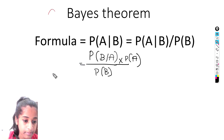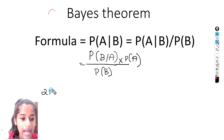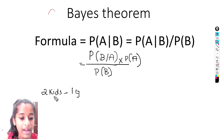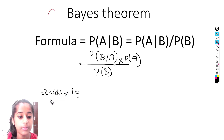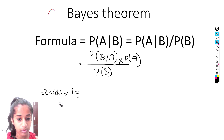Now let's solve an example. A couple has two kids, and we are told that one of them is going to be a girl. We have to check: what is the probability that the other kid is also going to be a girl?